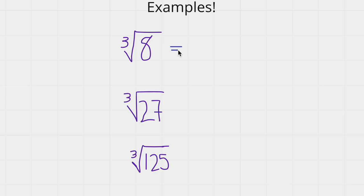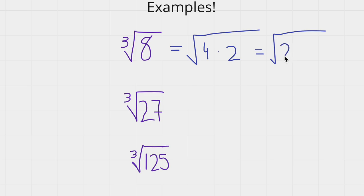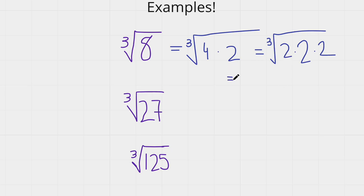So the cube root of 8. We know that 8 is 4 times 2, and 4 is equal to 2 times 2, so we can write 2 times 2 times 2. Because 2 is repeated 3 times inside the cube root, we take all these 2s out and make it into one 2, and the answer would be 2. So the cube root of 8 is 2.